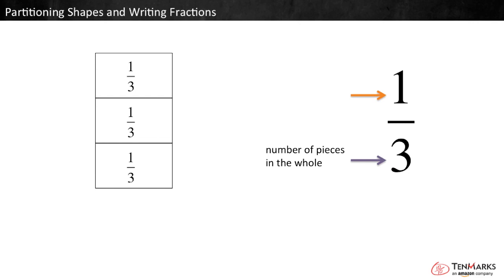The numerator, or top number, tells the number of pieces you're talking about. To tell the area of one piece, the numerator would be one. This fraction says one third. Each piece of the shape is one third.